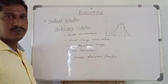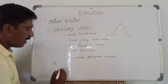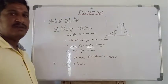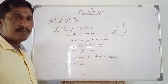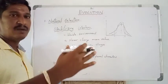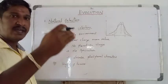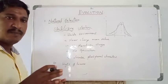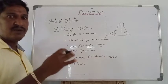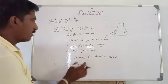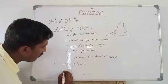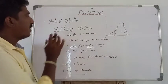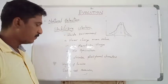That is stabilizing selection. An example is the height of humans. Very short and very tall humans are few in number and their numbers decrease, while average height is selected by nature to increase the population. Very short people and people more than seven feet are very few, but average height of five to six feet is always at a high proportion in the human population.